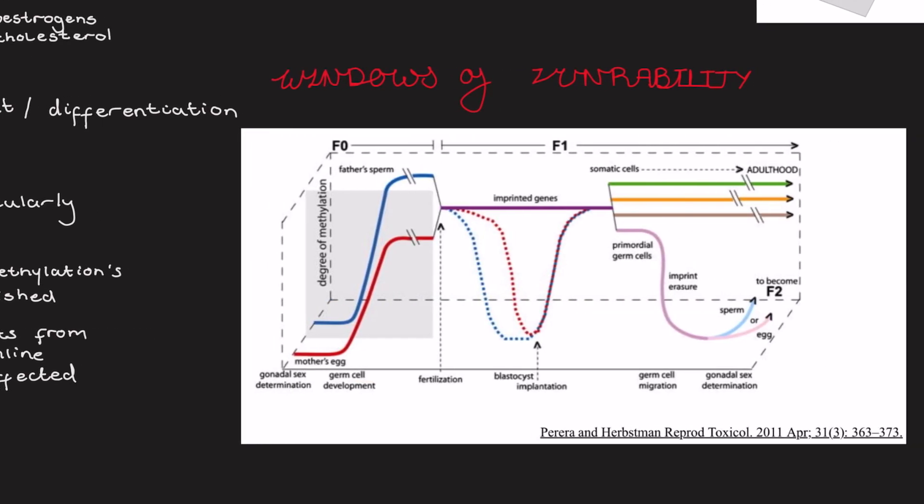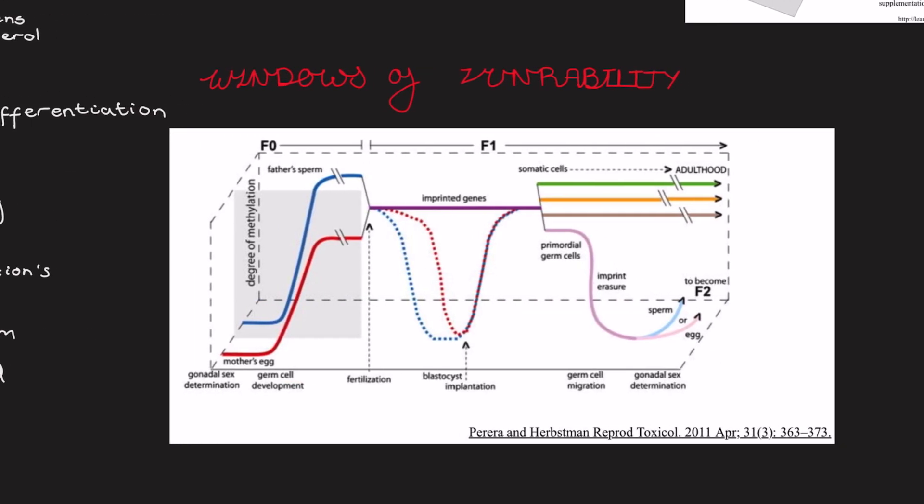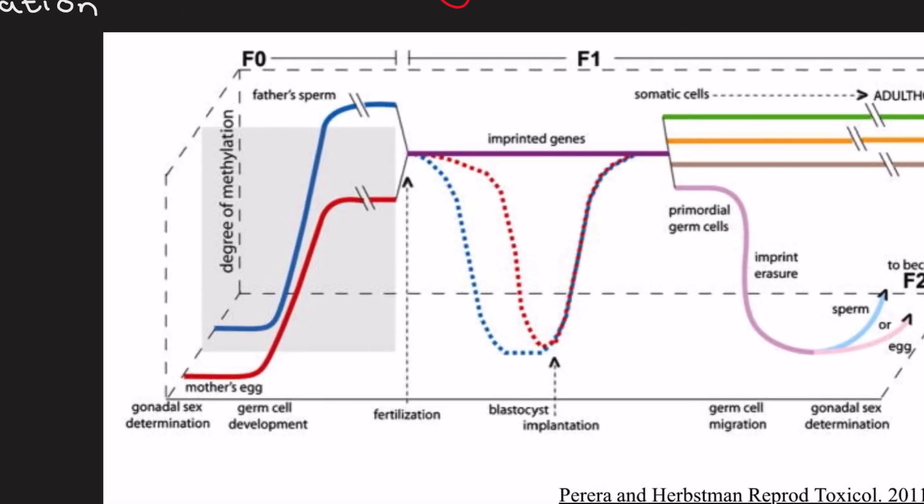And here's just a little example of the potential windows of vulnerability. There are multiple periods during which environmental exposure could affect the F1 generation's methylation status, potentially affecting the F1 phenotype. The first window is during the F0 stage, which is the parental germline cell development when methylation is reprogrammed following imprinting with the father's sperm, which is the blue line, and the mum's egg, which is the red line.